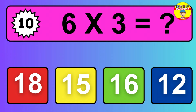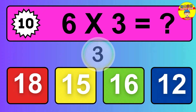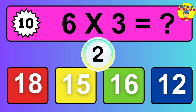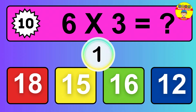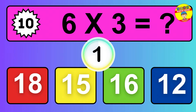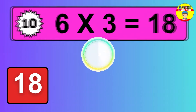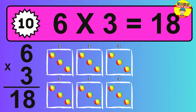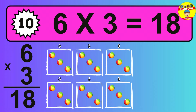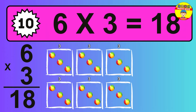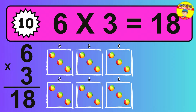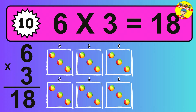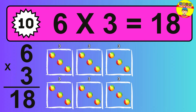Question 10. 6 times 3 equals what? The answer is 6 times 3 is 18. To calculate, we have 6 groups with 3 balls each one. So, how many balls do we have? 18 balls.